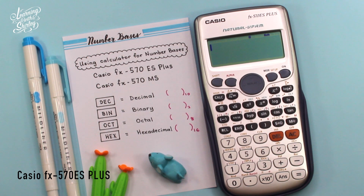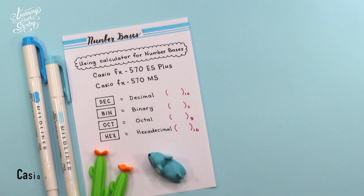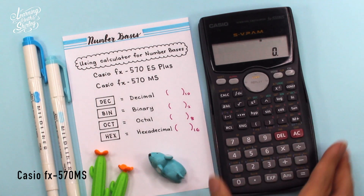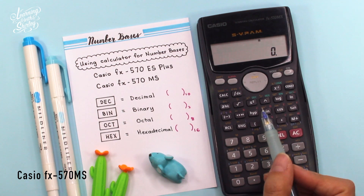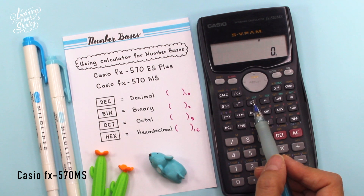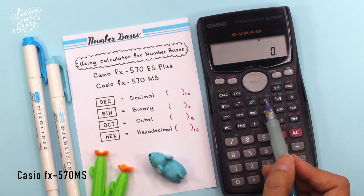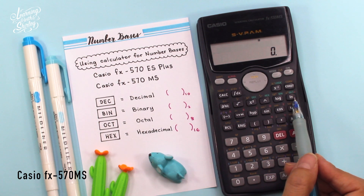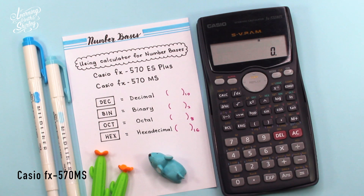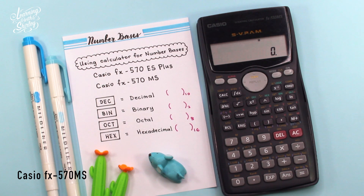Let's look at another model of calculator which is commonly used among students. We have the four buttons here as well: DEC (decimal), HEX (hexadecimal), BIN (binary), and OCT (octal). So these are the four buttons you have to remember and recognize, so that it will be easier for you to calculate using the calculator for this chapter on number basis.